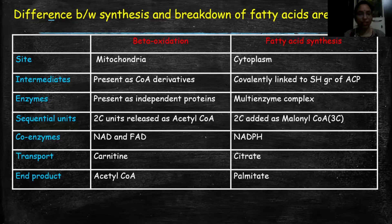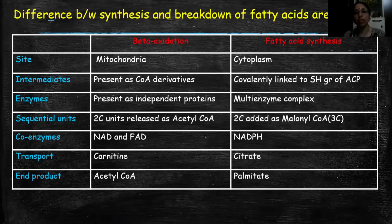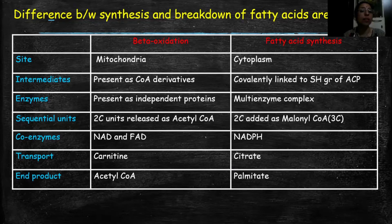Mitochondria is known as the powerhouse, and that's why beta-oxidation takes place there — because all the enzymes helpful in beta-oxidation are present in the mitochondria. On the other hand, for fatty acid synthesis, all the enzymes required to synthesize fatty acids are present in the cytoplasm. That's why fatty acid synthesis occurs in the cytoplasm. The next point is intermediates: beta-oxidation intermediates are present as CoA derivatives.